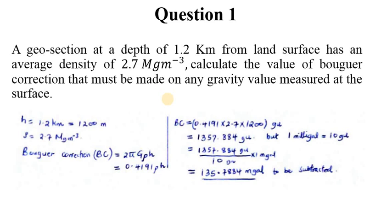Now let's get to the question itself. You're told we're talking about a geo-section at a depth of 1.2 kilometers, so H here is 1.2 kilometers which needs to be converted into meters, that is 1200 meters. The density is 2.7 megagrams per cubic meter, that is the general density of the geo-section or the crustal body.